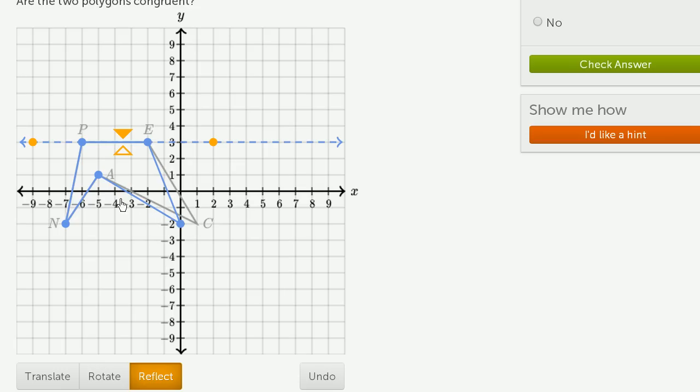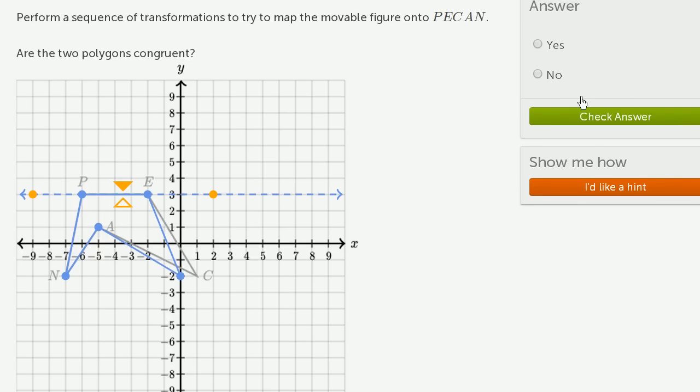So these two are not congruent. I'm not able to get them to exactly overlap each other just through translations, rotations, and reflections. So are these polygons congruent? No.